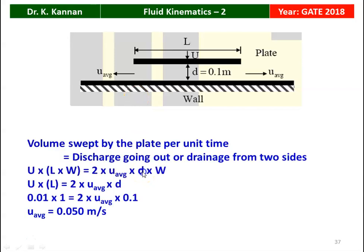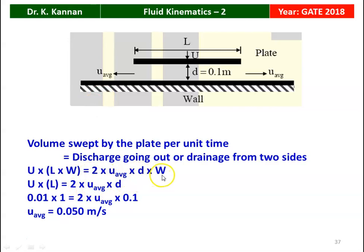This is the diagrammatic representation of the problem. The volume swept by the plate per unit time equals the discharge draining from two sides: U × l × w = 2 × U_avg × d × w. Width cancels, giving U × l = 2 × U_avg × d. Substituting l = 1 m, U = 0.01 m/s, d = 0.1 m: 0.01 × 1 = 2 × U_avg × 0.1, so U_avg = 0.05 m/s.